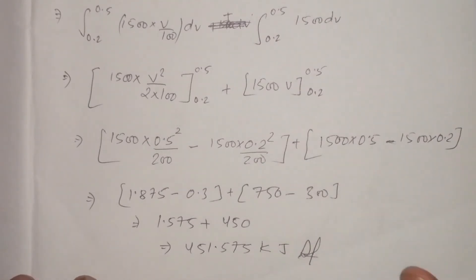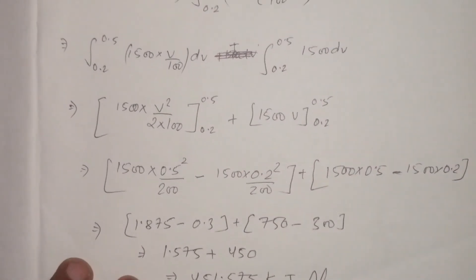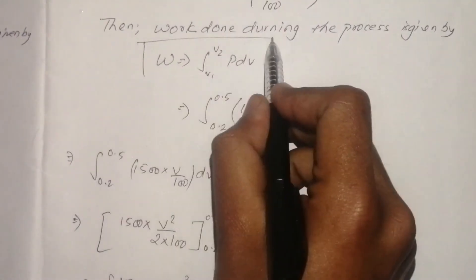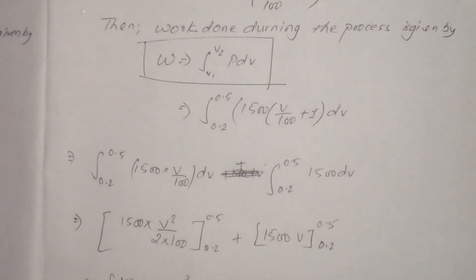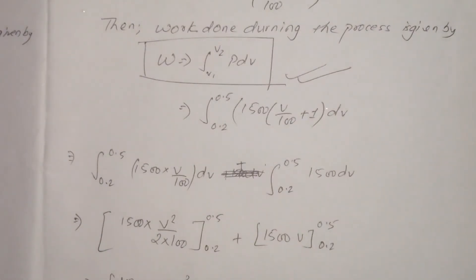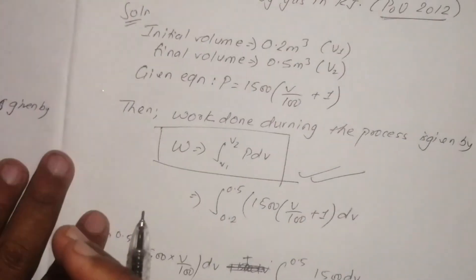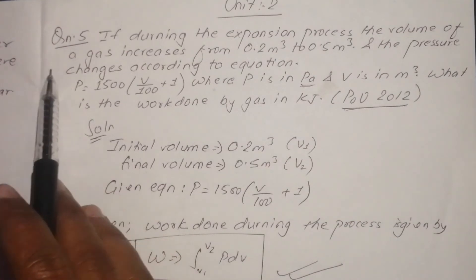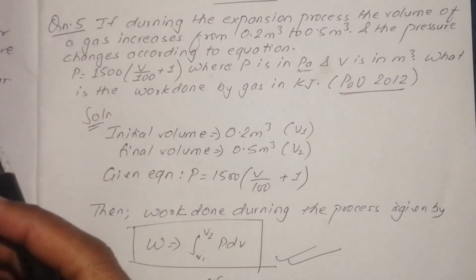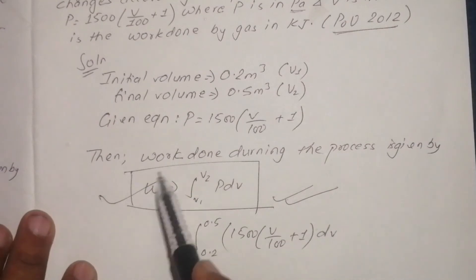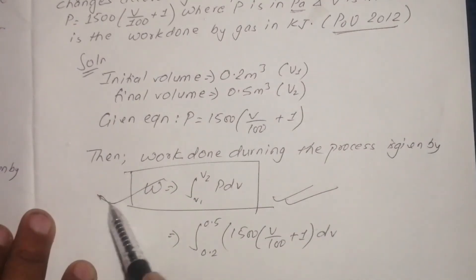You need to remember the integration formula — this is the most important formula for calculating work done. Don't forget this formula. We will now discuss question number five, covering some numerical problems from the book, using the work done formula.